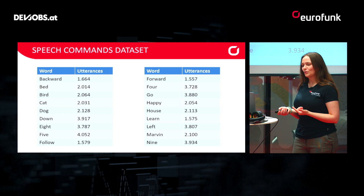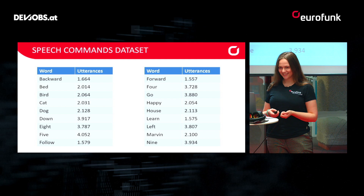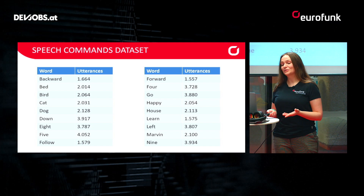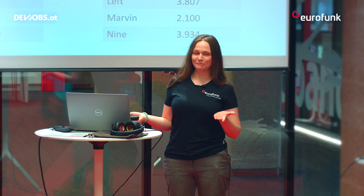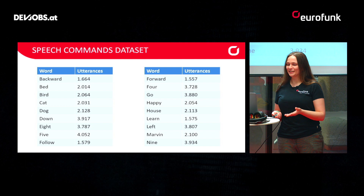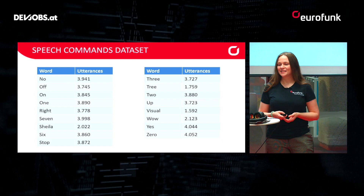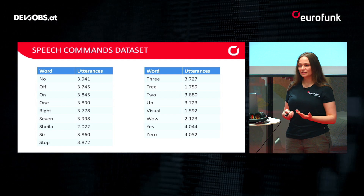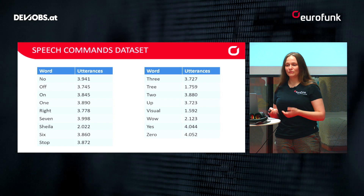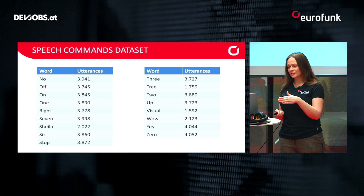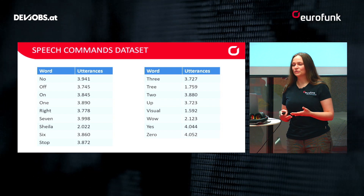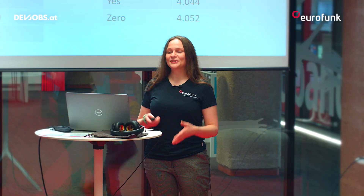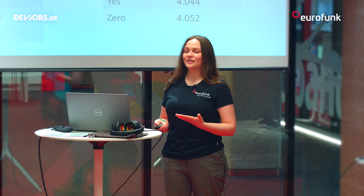Here is an overview of all the words in the Speech Commands dataset. For example, there are directional words like backward and forward, animals like cat and dog, and also the digits from 0 to 9. It also shows how often each word is spoken in the samples — for example, the word 'no' has about 4,000 utterances. Overall, the samples are very well distributed, so no word is spoken 100,000 times while another only once. It's really important when training your model that your data is well distributed.